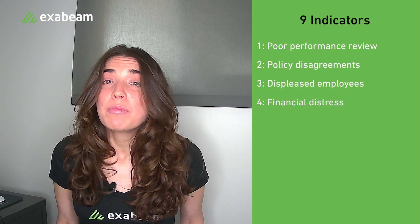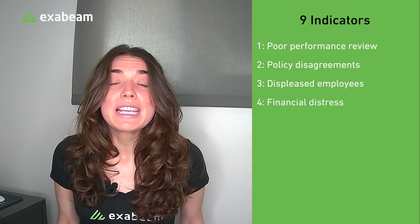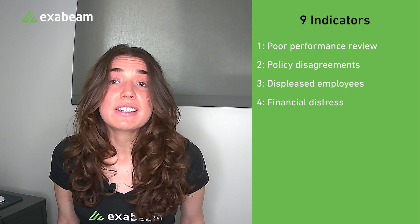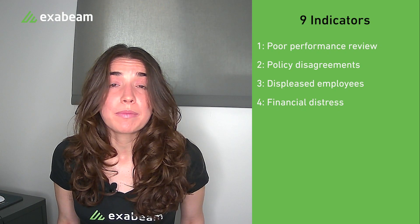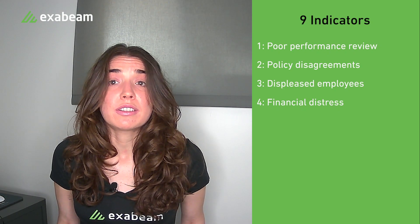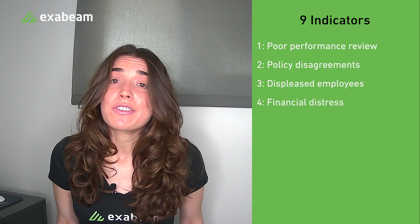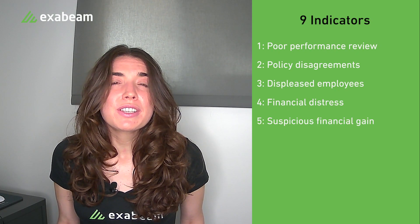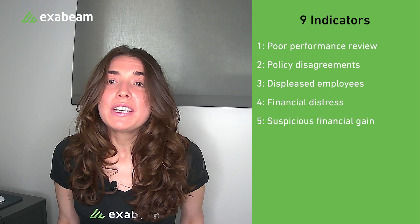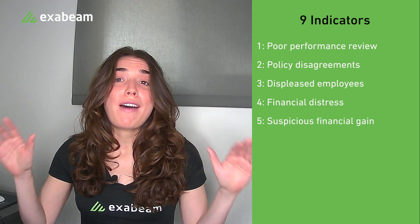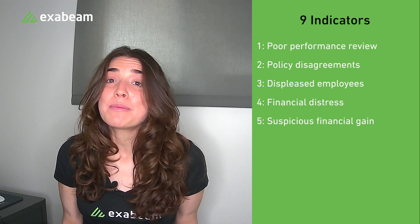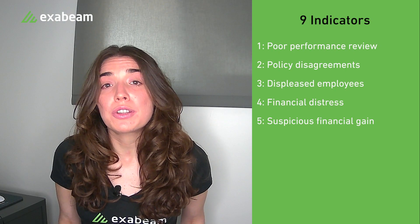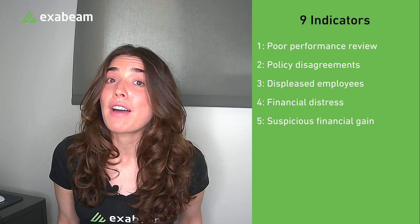Financial distress is another indicator. Employees having financial difficulties could be easily exploited by outsiders looking to harm the company. These employees could be motivated to steal and sell valuable company data to pay off personal debts, or take information from other employees for extortion. Companies should also watch for suspicious financial gain — employees spending well above their pay grade, such as purchasing expensive cars, should be monitored closely.